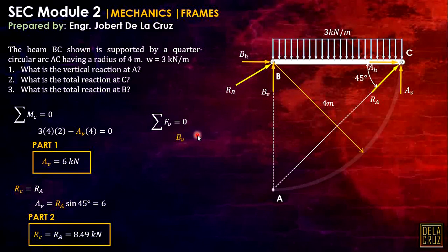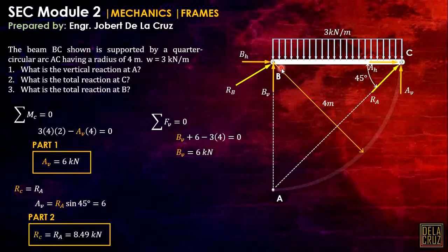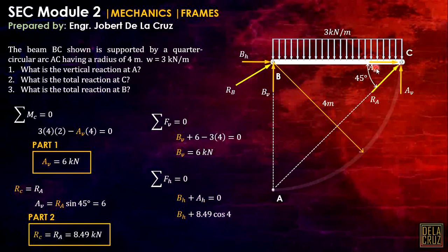Taking summation of forces vertical to find BV: BV plus AV (6 kN) minus 3 kN/m times 4 meters equals zero, giving BV. For BH, considering horizontal forces: BH plus AH equals zero, where AH is RA times cosine 45.